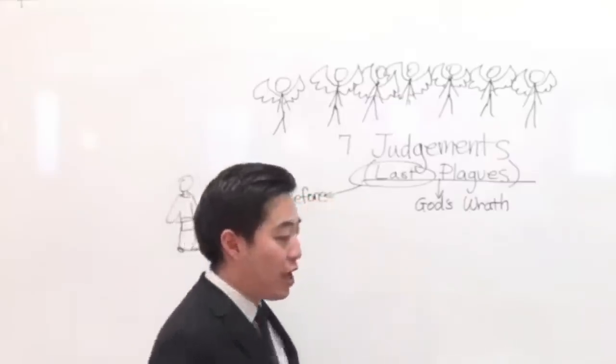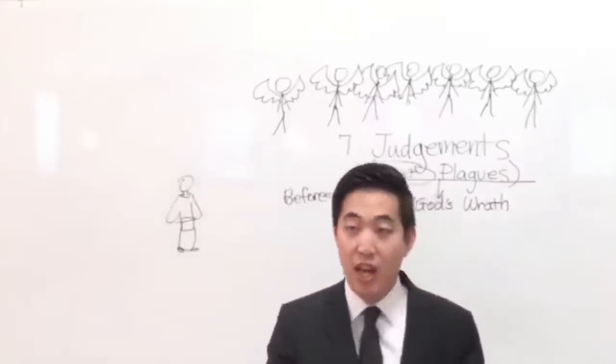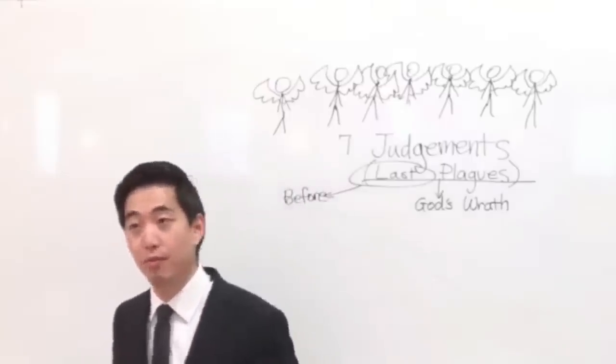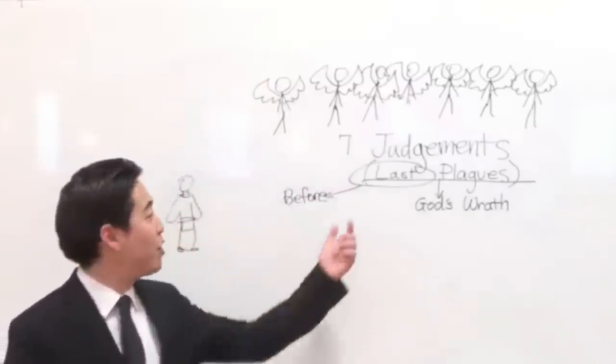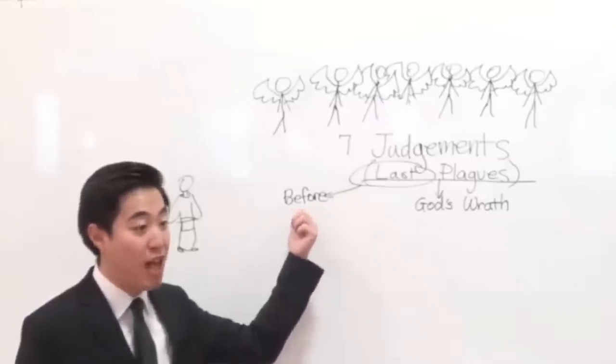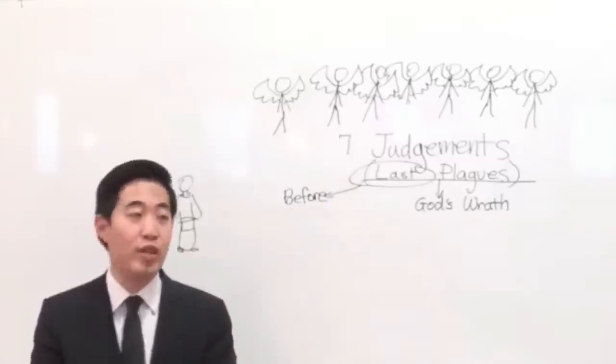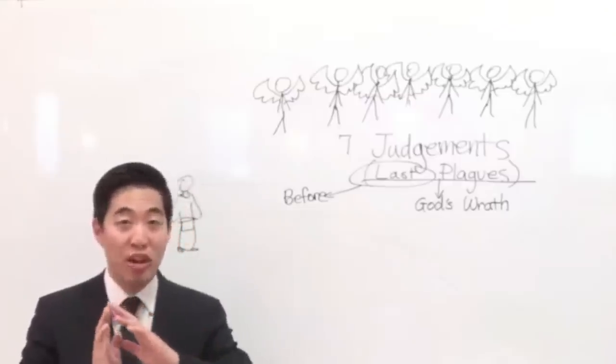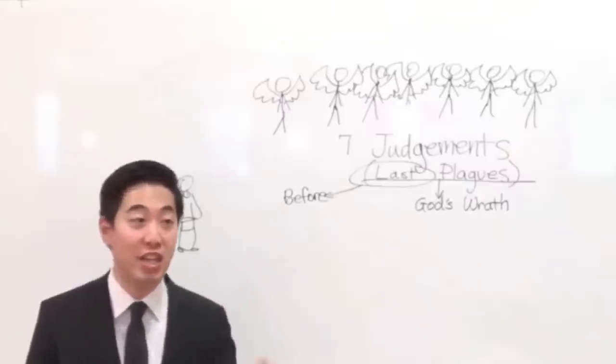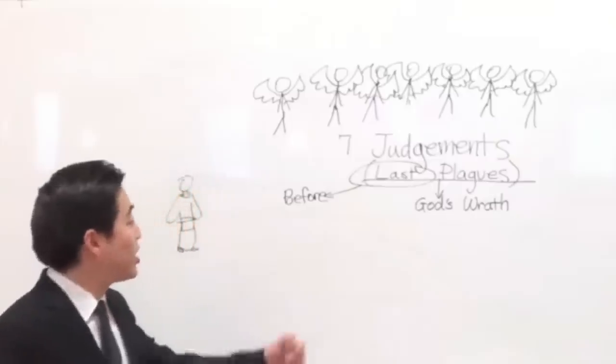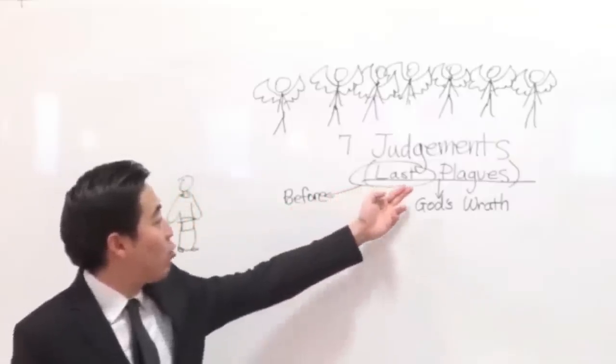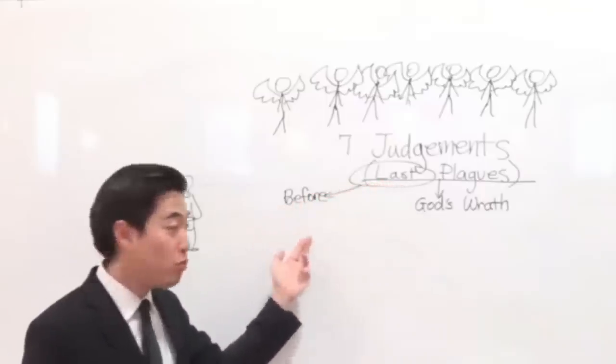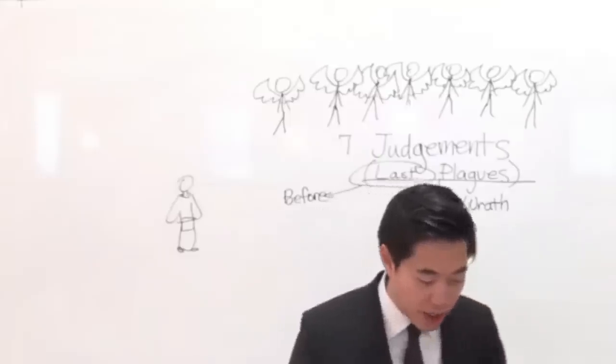If you believe in the pre-tribulation rapture of the church, guess what? You're actually the real pre-wrathers. You know why? Because that entire timeline of the tribulation was going through God's wrath and his plagues. That was so evident when we saw the seals at Revelation chapter 6. God's wrath was already starting with the beginning of the Antichrist being unleashed, that first seal unleashed.